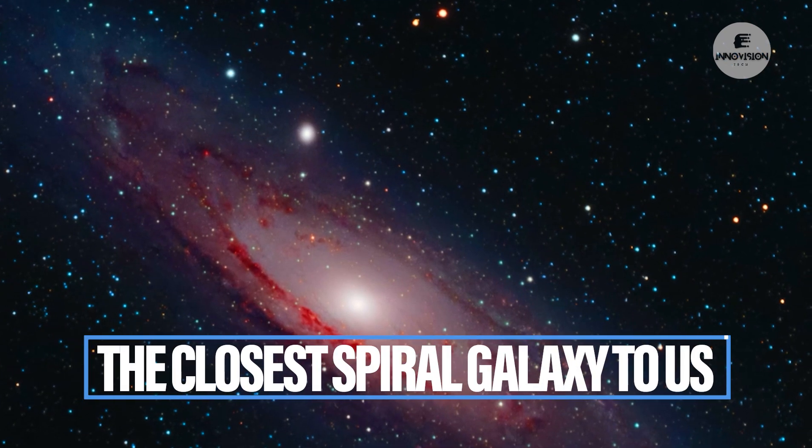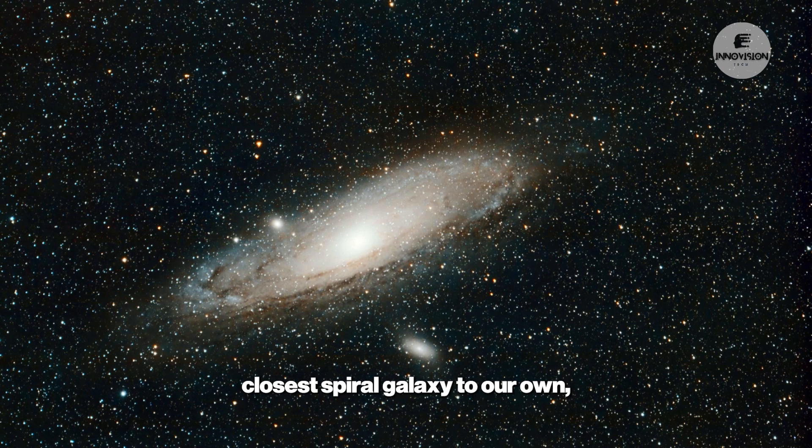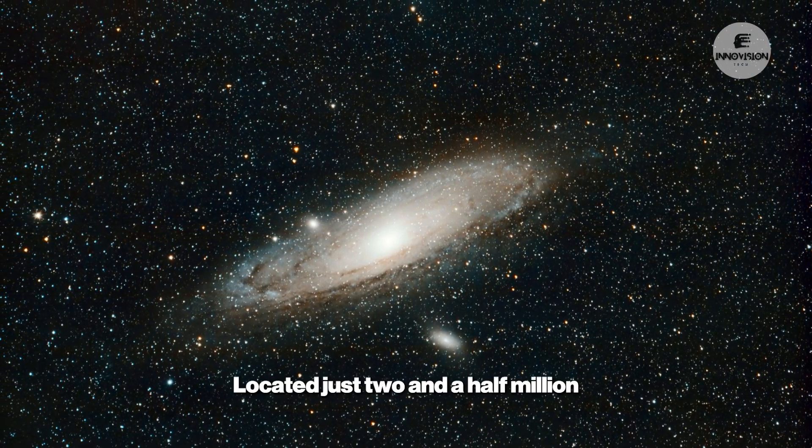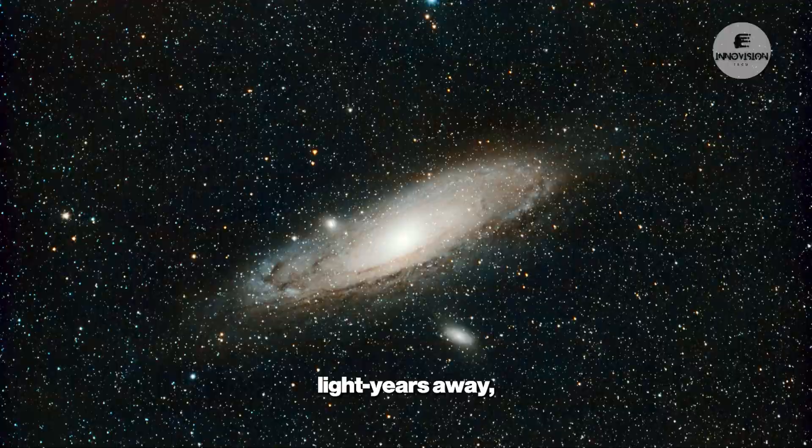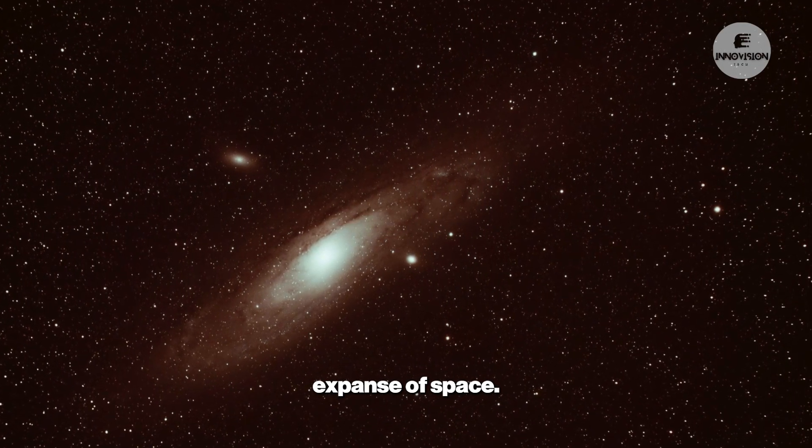The Closest Spiral Galaxy to Us. Andromeda holds the title of being the closest spiral galaxy to our own, the Milky Way. Located just two and a half million light years away, it's a cosmic neighbor in the vast expanse of space.